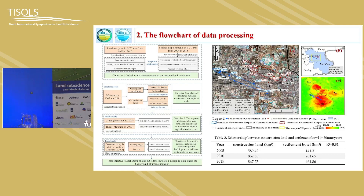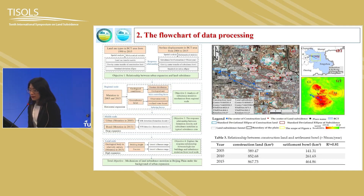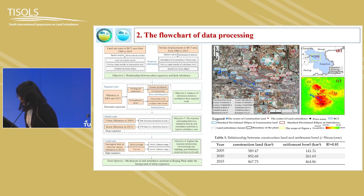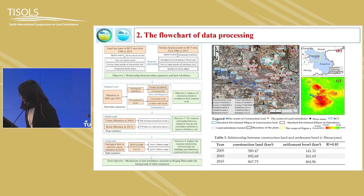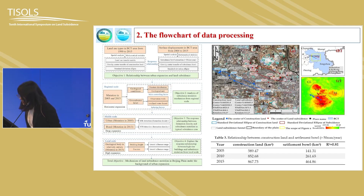We then perform analysis from the perspective of urban expansion. First, we get the relationship between urban expansion and land subsidence. From regional scales and the perspective of horizontal urban expansion, we use geological conditions and groundwater levels to analyze the subsidence mutation mechanism. Then we use SFR detection from deep urban expansion to find the relationship between formation densities and subsidence mutations. From local scales and high-rise urban expansion, we also collected building heights and fractures to explore the response relationship between high-rise buildings and subsidence mutations.